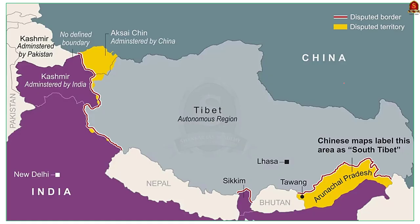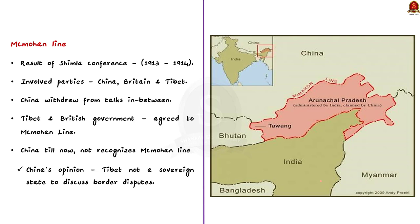India and China have a land border of nearly 3,488 km, extending from Jammu and Kashmir in the west to Arunachal Pradesh in the east. The border covers the western sector (union territories of Jammu and Kashmir and Ladakh), the middle sector (Himachal Pradesh and Uttarakhand), and the eastern sector (Sikkim and Arunachal Pradesh). The border line separating Arunachal Pradesh from China is called the McMahon Line. This line was first drawn as a result of the Shimla Convention between China, Tibet, and Great Britain in 1914. China later withdrew from the talks, leaving Tibet and the British government to negotiate — and this is where the problem arises. China does not recognize this agreement.